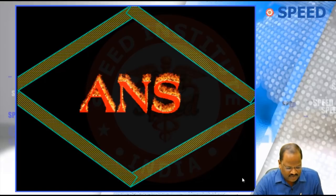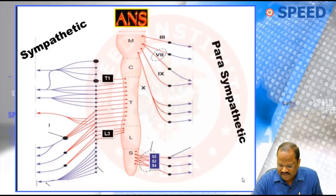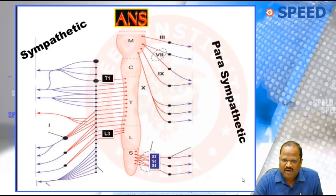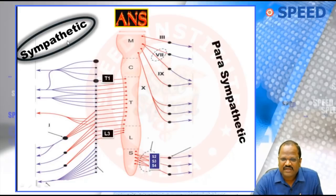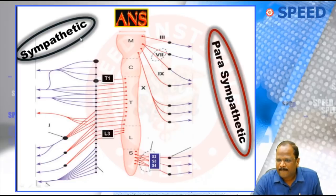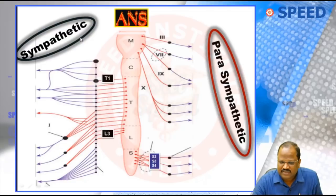First, ANS. In the ANS, we have two important systems: namely the sympathetic system and one more thing called the parasympathetic system. One is called sympathetic, and the other is called parasympathetic.